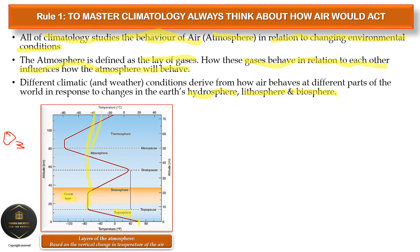After the stratosphere, the next sphere is the mesosphere — known as the coldest sphere. Temperatures in the mesosphere extend up to negative 80 degrees Celsius. After that comes the thermosphere, the last and outermost sphere, which is also one of the coldest.